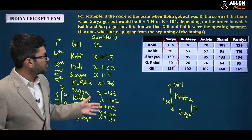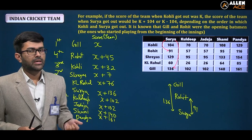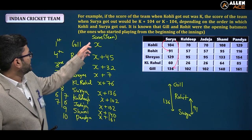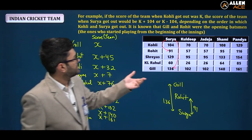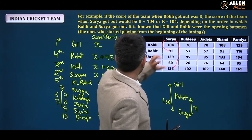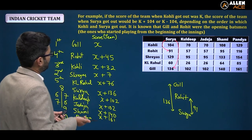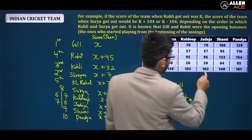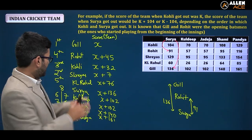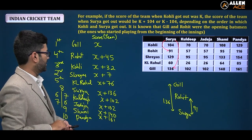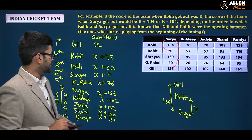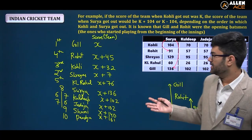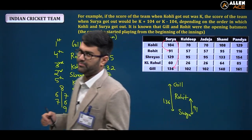You can verify this using any pair from the table — the gap between Gill and Rohit is 45, and Gill to Jadeja is 102, consistent with our data. This much is clear; now let's jump to the questions. There may also be hypothetical questions where a total score is provided.